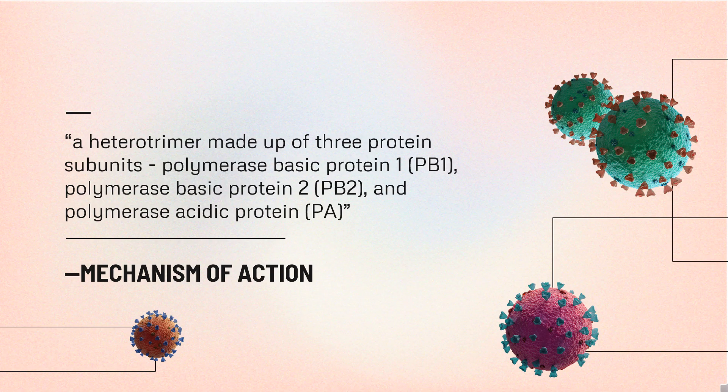After administration, the prodrug biloxavir marboxyl is almost completely hydrolyzed by esterases in the gastrointestinal lumen, intestinal epithelium, liver, and blood to its active metabolite, biloxavir. Biloxavir selectively inhibits the PA protein, blocking the initiation of mRNA synthesis and ultimately influenza virus proliferation. Cap-dependent endonuclease is a highly conserved region across influenza strains. However, biloxavir is still vulnerable to resistance because amino acid substitutions in the PA protein can lead to reduced viral susceptibility to biloxavir.